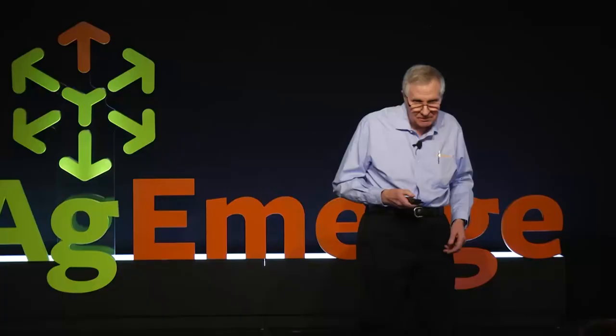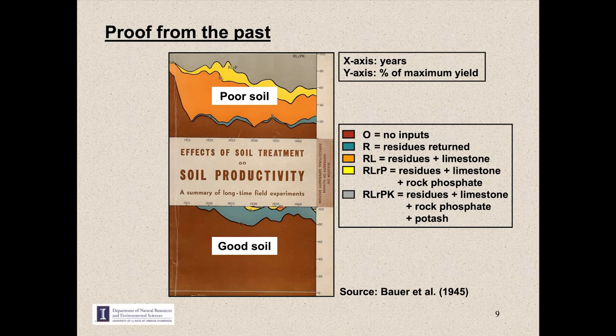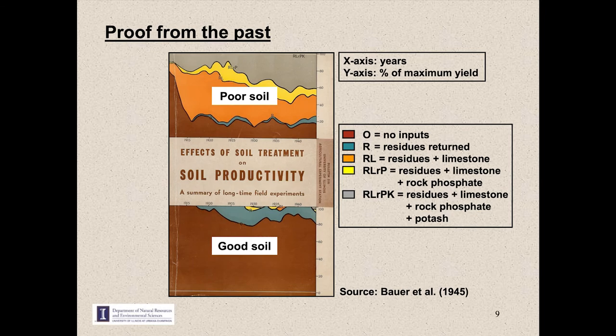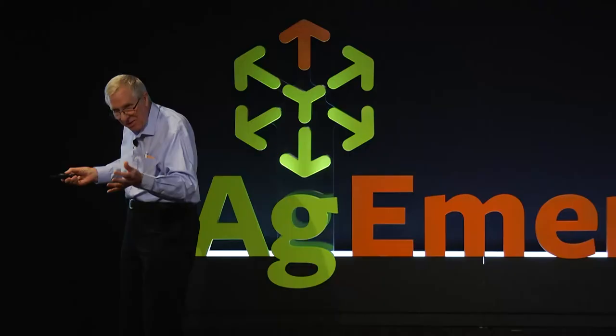Then we come to the orange zone — the biggest effect on the poor soil came from residues plus limestone, but it did hardly anything on the good soil. The yellow zone was rock phosphate plus limestone plus residues: another nice increase for the poor soil, virtually nothing for the good. And finally at the top, the light gray shaded area adds potash to rock phosphate, limestone, and residues — a nice increase for the poor soil, hardly anything for the good. So it's very clear from this cover that it's the poor soil that needs help: it needs fertilizer, it needs limestone. The good soil needs much less.